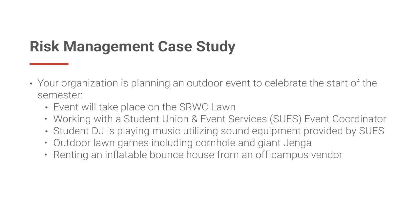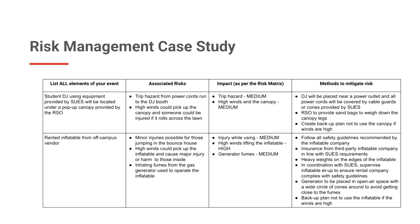Additionally, you plan to play lawn games including Cornhole and Giant Jenga, and have worked with a third-party, off-campus vendor to secure the use of an inflatable bounce house at the event. Based on this event, let's complete the risk mitigation plan together. We list our student DJ as an event element — the SUZ-rented sound equipment and a table for the DJ will be placed under a pop-up canopy provided by your organization. What are the potential associated risks?